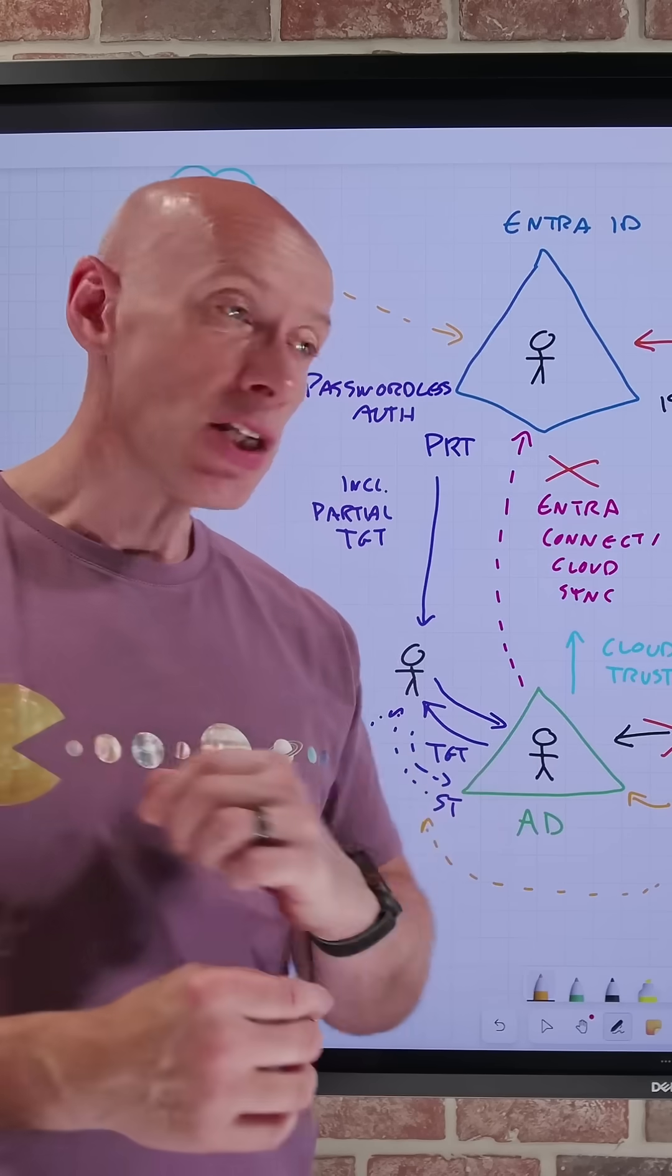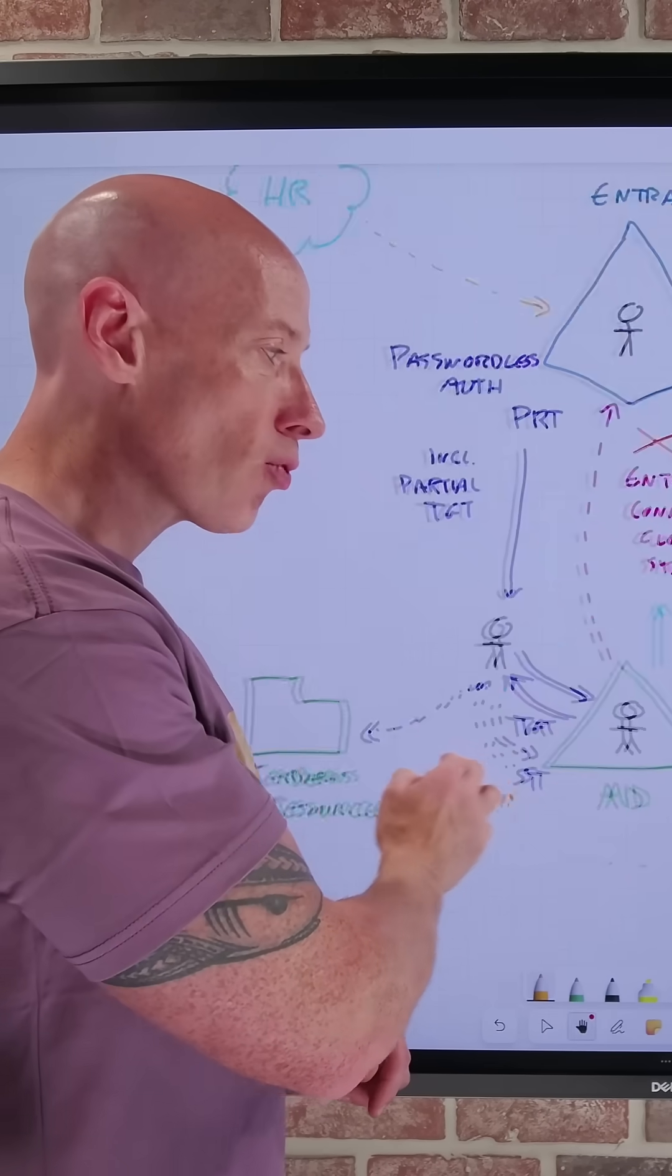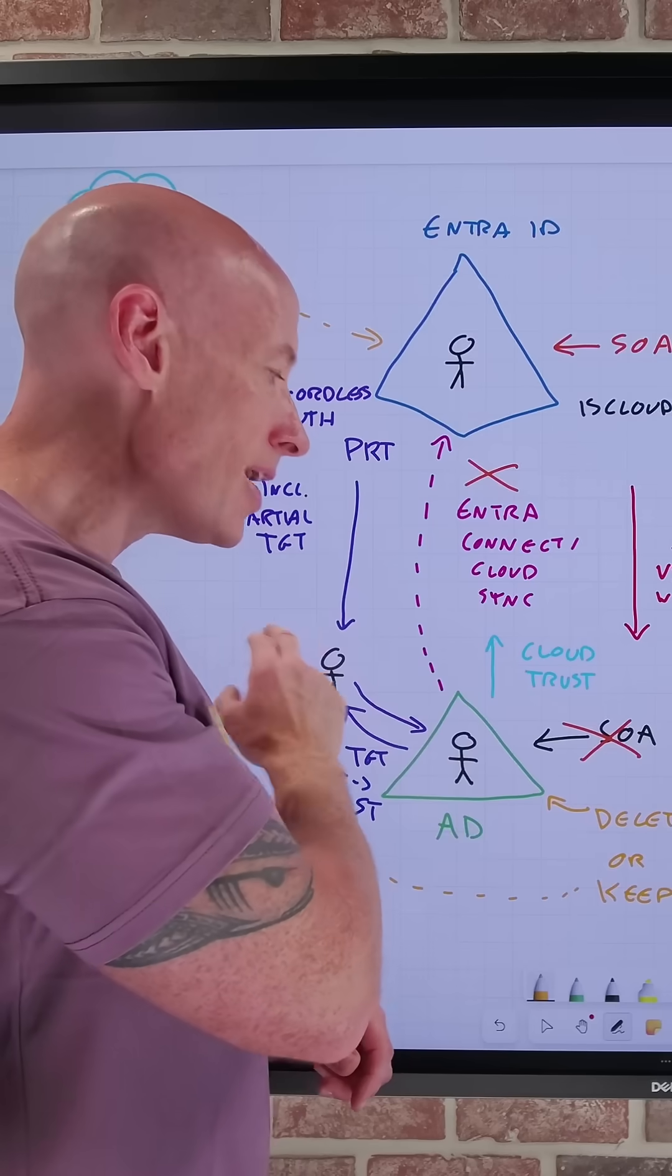Even after I make this change, I can still access Kerberos type capabilities if I establish a cloud Kerberos trust between my AD and Entra.